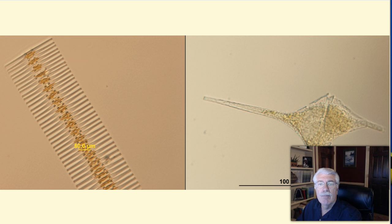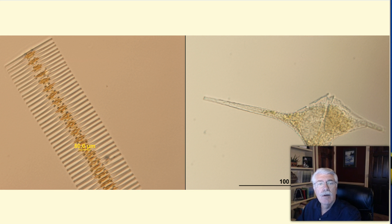Phytoplankton may be eaten by small fish, but it's the zooplankton that eat most of the phytoplankton. Phytoplankton play an even bigger role in aquatic systems than just food for aquatic animals.